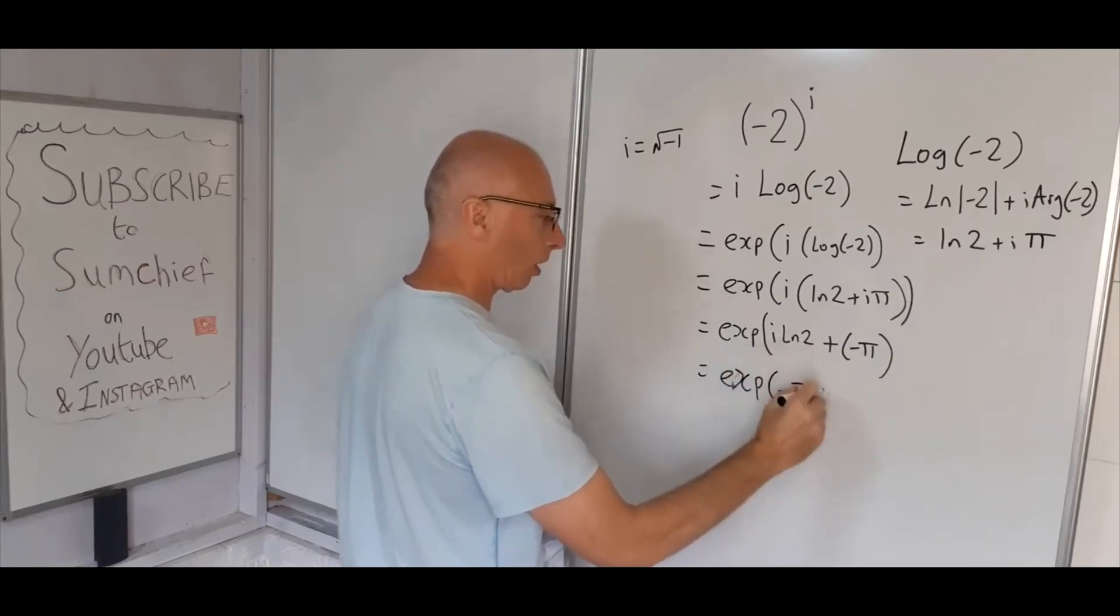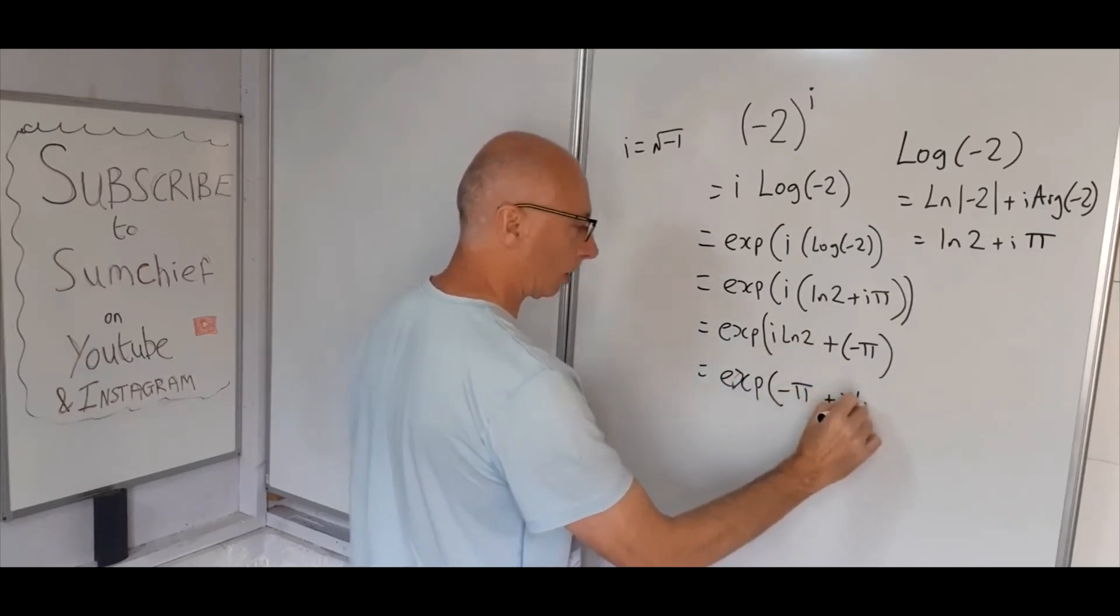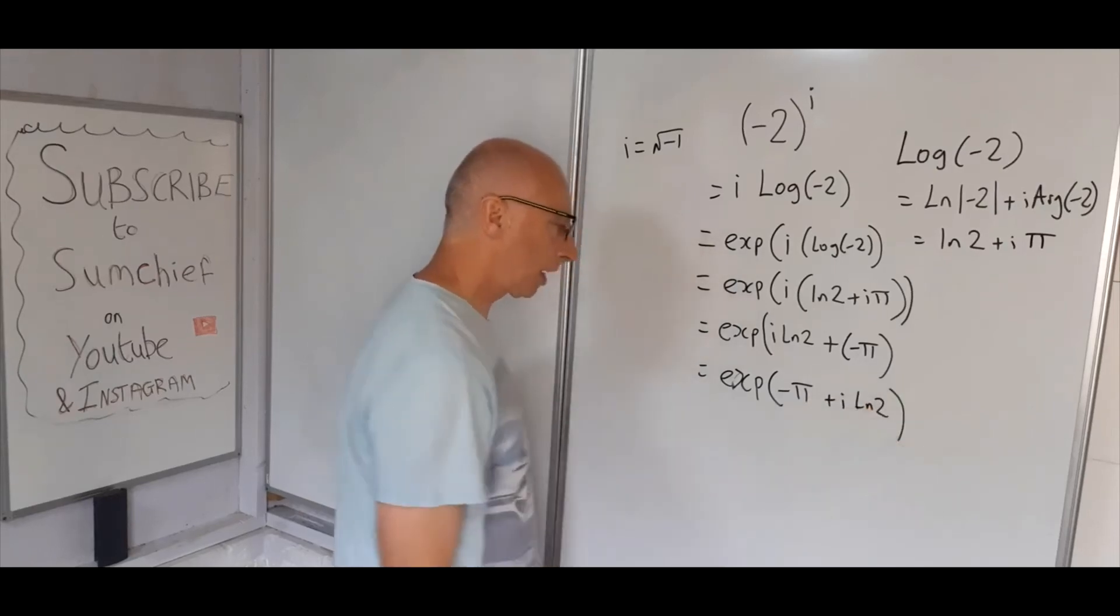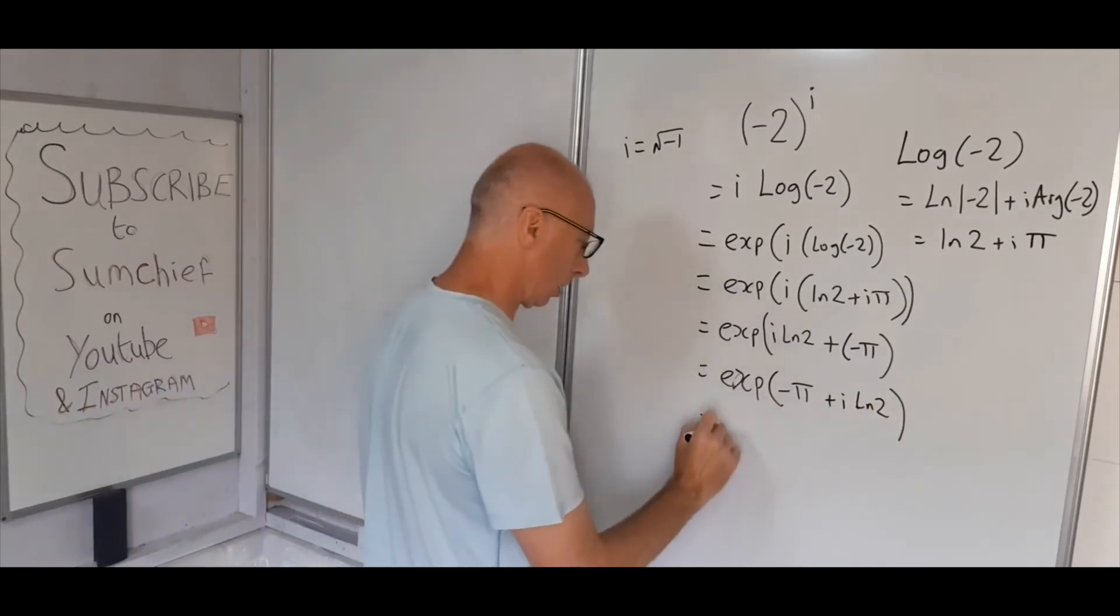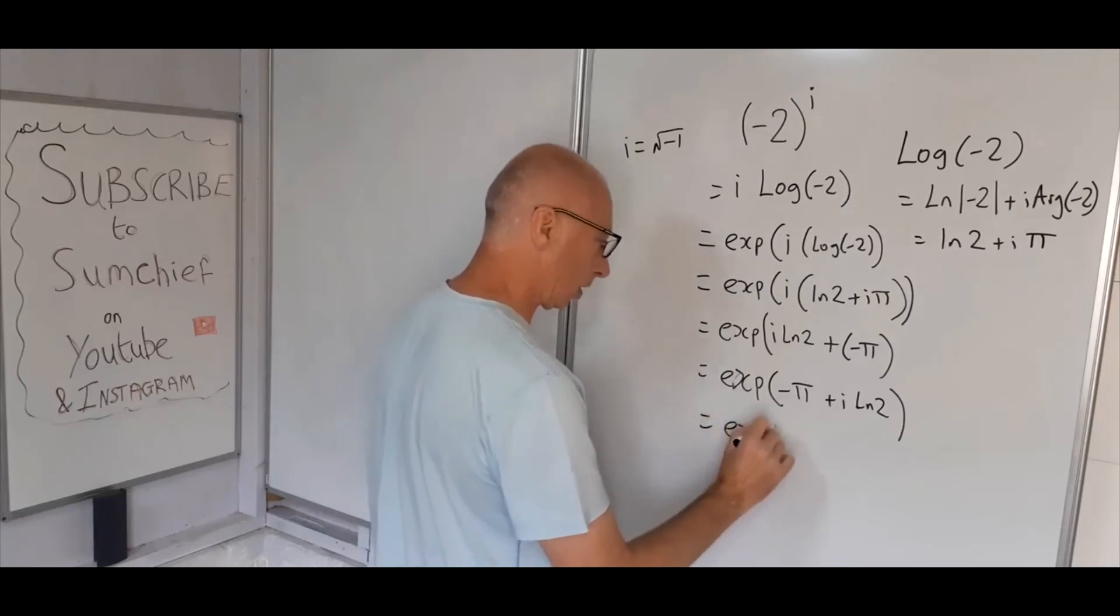And now we can use the exponential properties, exponential minus pi, and then multiply by exponential i natural log of two.